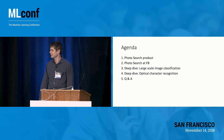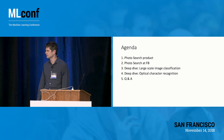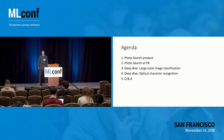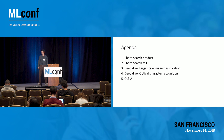In today's agenda, we're going to cover several things. First, I'll talk about the image search product at Facebook and its use cases. The second topic is going to be about the technology of image search and how to build an effective search engine. And I'm going to do two deep dives: one about large-scale image classification, and the second one about optical character recognition.